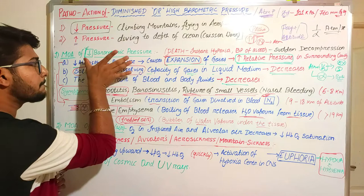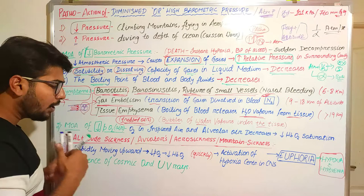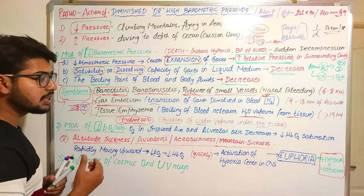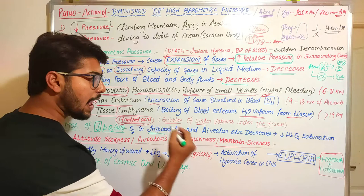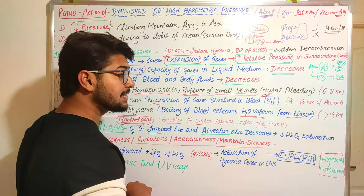As we discussed barometric pressure, there will also be a change in the partial pressure of oxygen — it will decrease. When the partial pressure of oxygen decreases, the oxygen will be deficient in the environment, meaning there will be less amount of oxygen in inspired air and less amount of oxygen in the alveolar air. That will lead to decreasing in hemoglobin oxygen saturation.